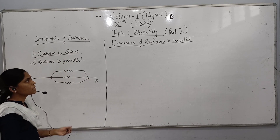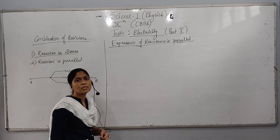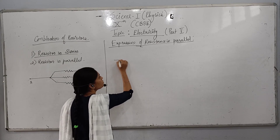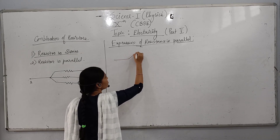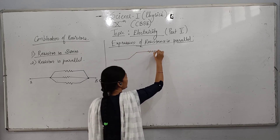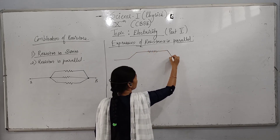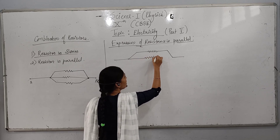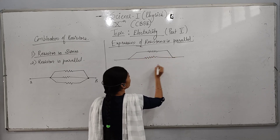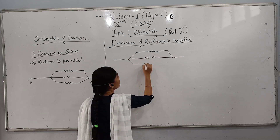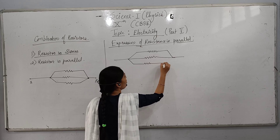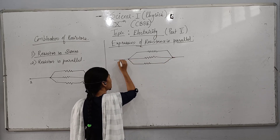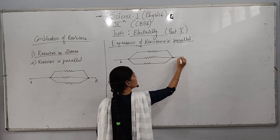Now we will see the expression for resistance in parallel. Consider three resistors which are connected in a parallel combination between two points A and B.